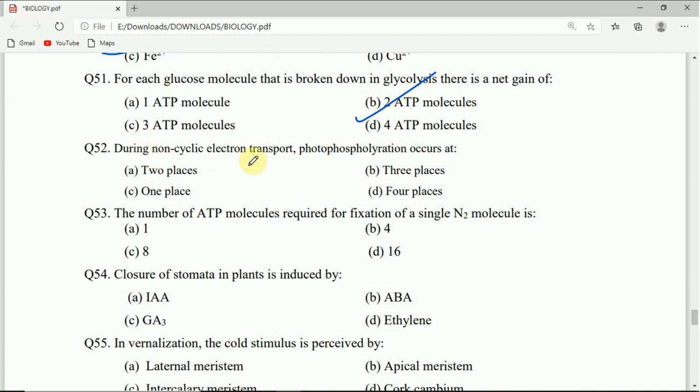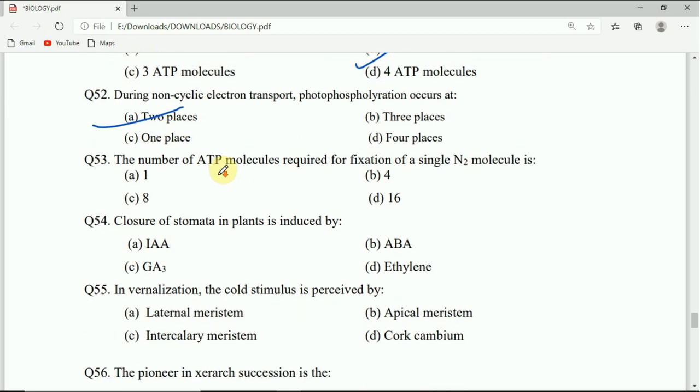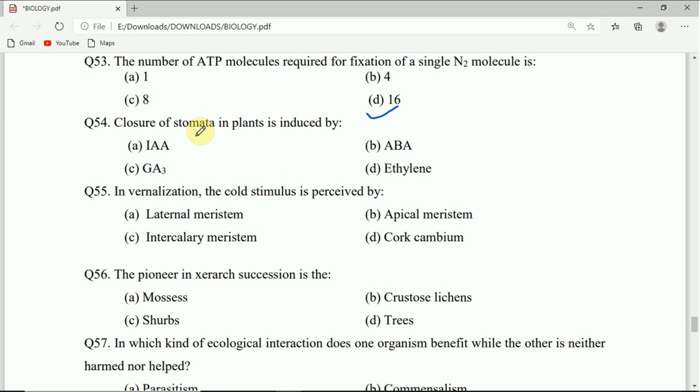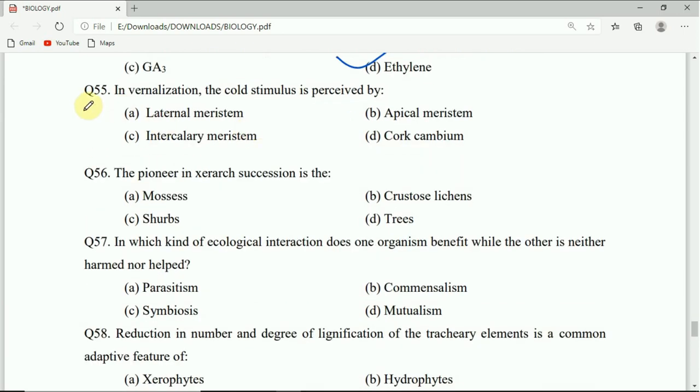Question 52: During non-cyclic electron transport, photophosphorylation occurs at two places, three places, one place, or four places. Correct answer is two places. Question 53: The number of ATP molecules required for fixation of a single nitrogen molecule is 1, 4, 8, or 16. Correct answer will be 16. Question 54: Closure of stomata in plants is induced by IAA, ABA, GA3, or ethylene. Correct answer will be ABA.